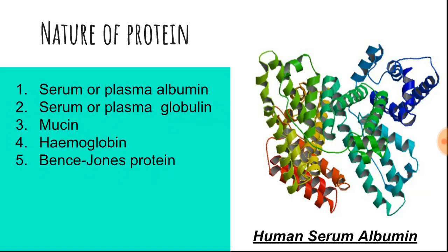Serum globulin is also present with albumin in urine; these two proteins constitute what is known as urinary albumin. When equal volumes of urine and saturated solution of ammonium sulfate are mixed, globulin gets precipitated. Mucin is present in trace amounts in urine and is precipitated without heat. Hemoglobin generally does not appear, but when hemolysis of red cells occurs, hemoglobin is found in the urine. Bence Jones protein is found in plasma cell myeloma; when people suffer from multiple myeloma, both Bence Jones protein and serum albumin are found in the patient's urine.